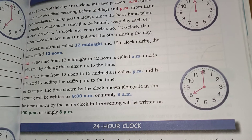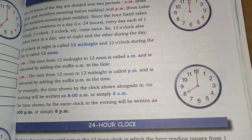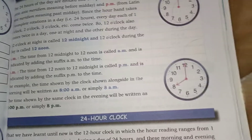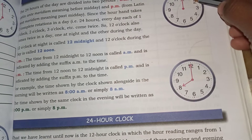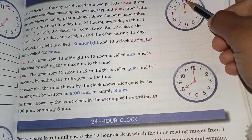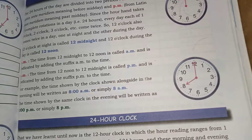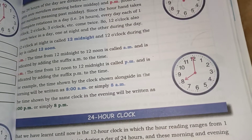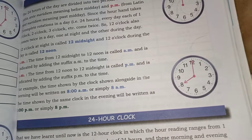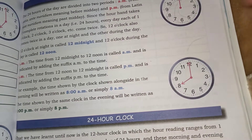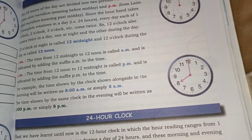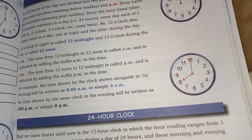AM: the time from 12 midnight to 12 noon is called AM. When we reach 12 o'clock at night, we say AM. It is indicated by adding the suffix AM to the time. PM: the time from 12 noon to 12 midnight is called PM, indicated by adding the suffix PM to the time.